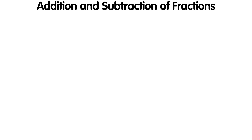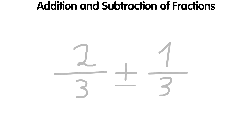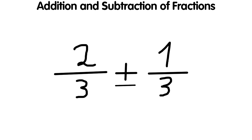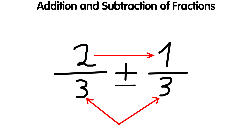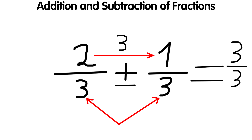Operations with fractions. Adding and subtracting fractions requires a common denominator. After that, addition or subtraction is done only with numerators and the denominator remains unchanged. For example, for the fractions two-thirds and one-third, the sum will be three-thirds.